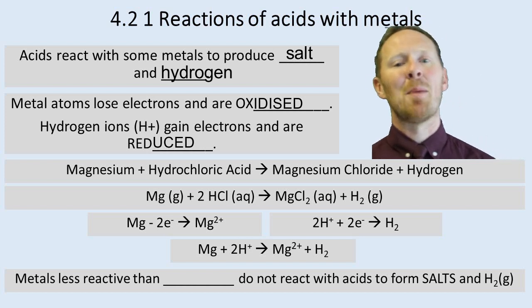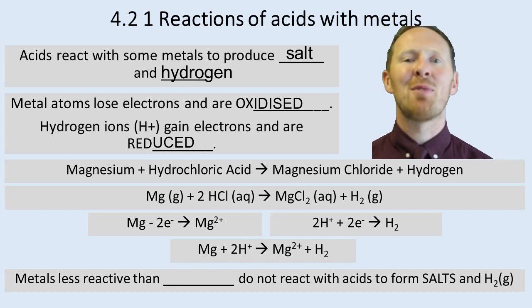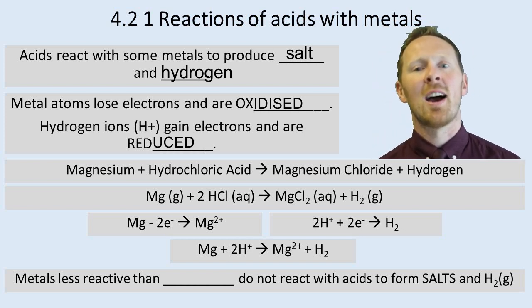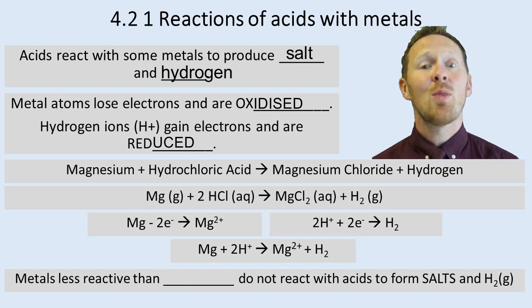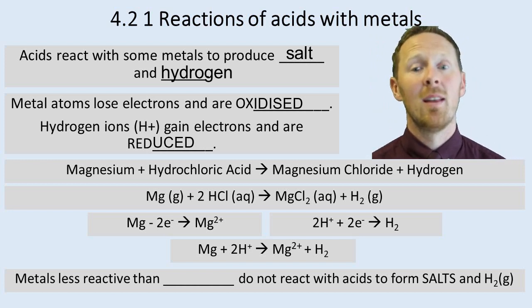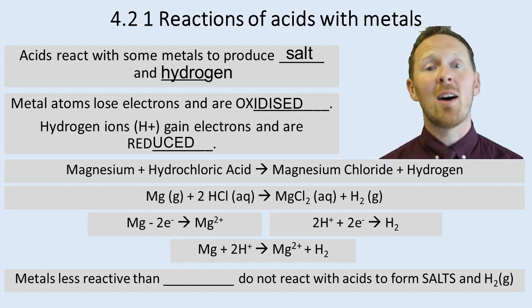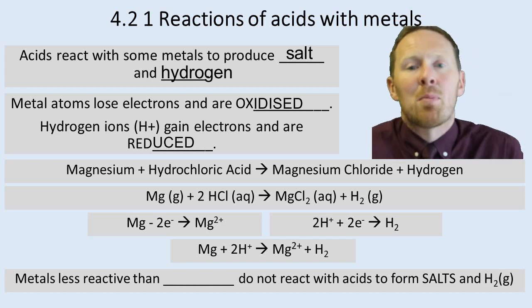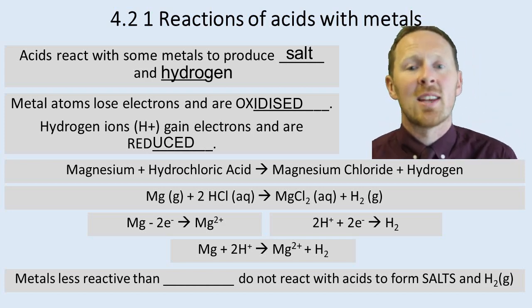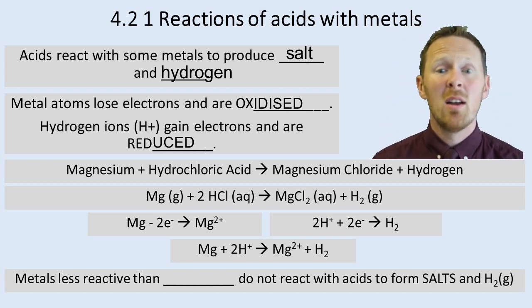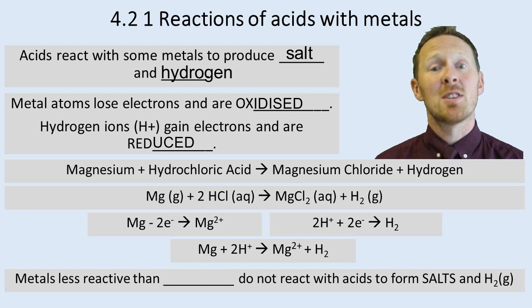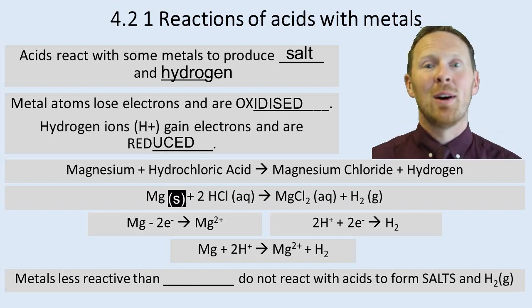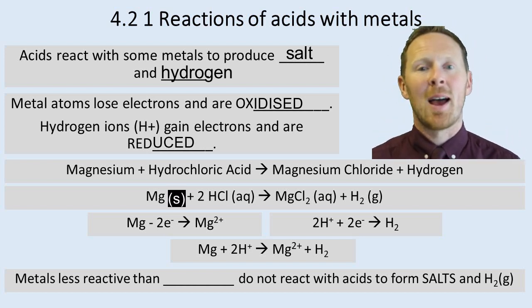Let's look at an example. Magnesium reacts with hydrochloric acid to make magnesium chloride and hydrogen - that is a word equation. The next one down: Mg with the state symbol G in brackets to show it's a gas, which is wrong because magnesium is a solid. So that should be an S in brackets. Well done if you spotted that.